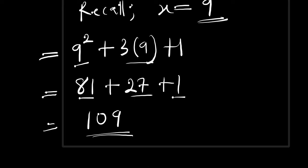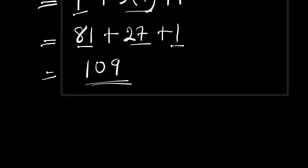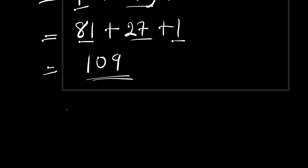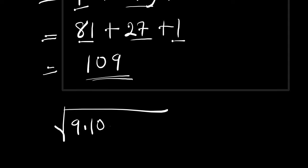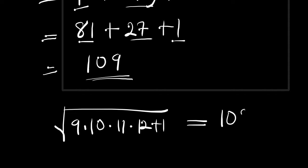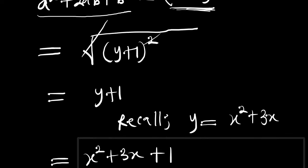So we can say that the square root of 9 times 10 times 11 times 12 plus 1 is equal to 109, and we have not made use of any calculator. That is it for the video — thank you and goodbye.